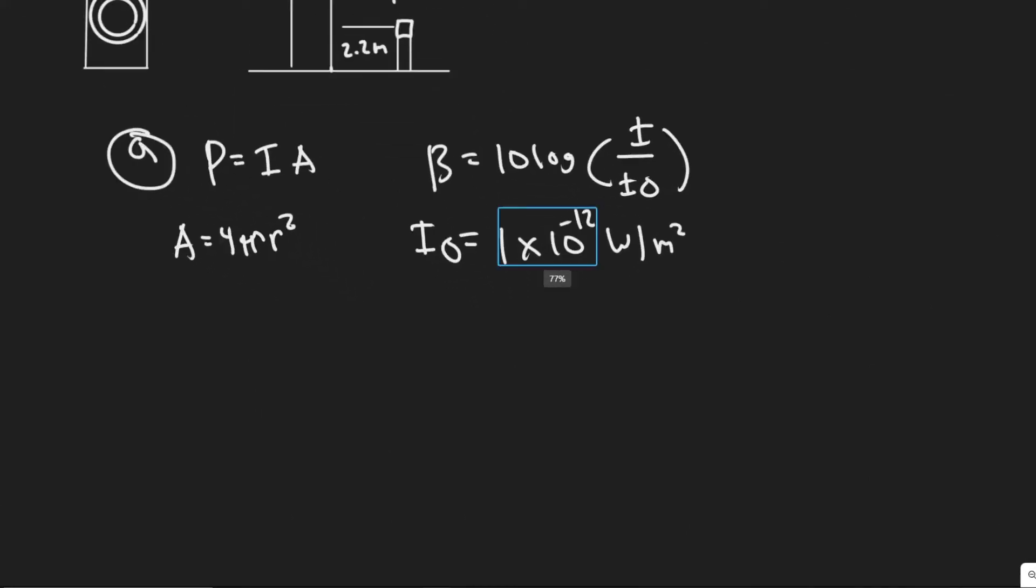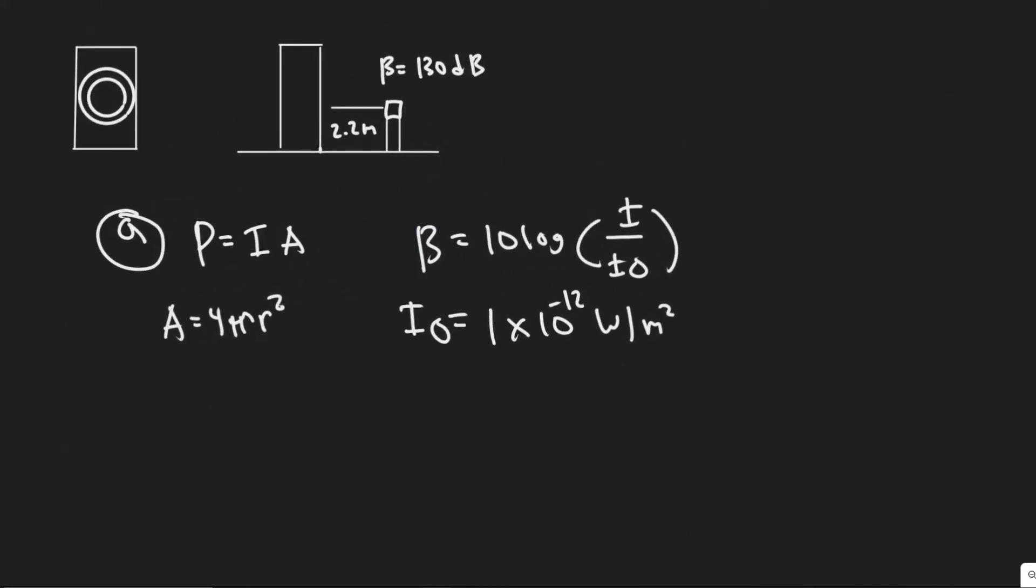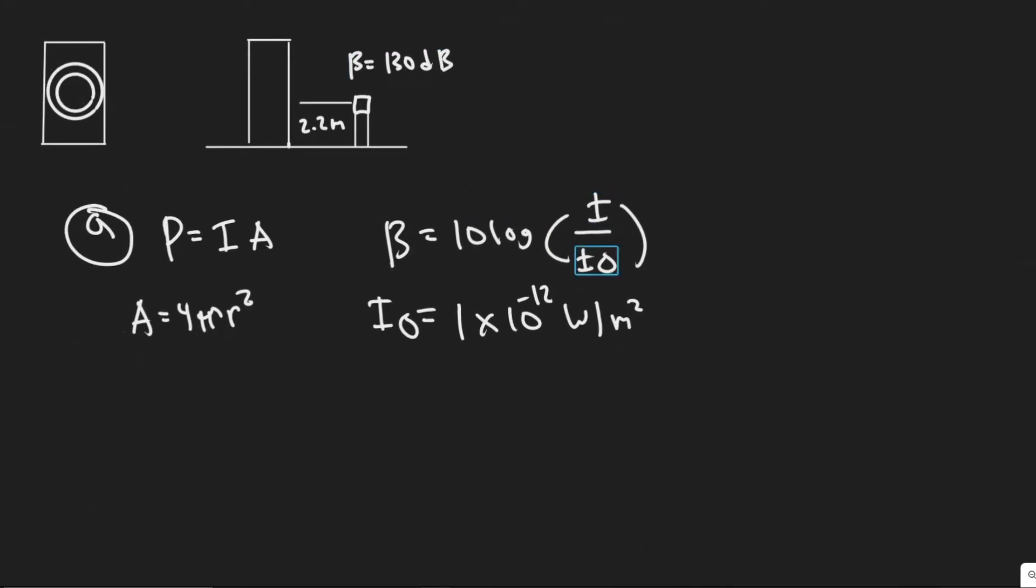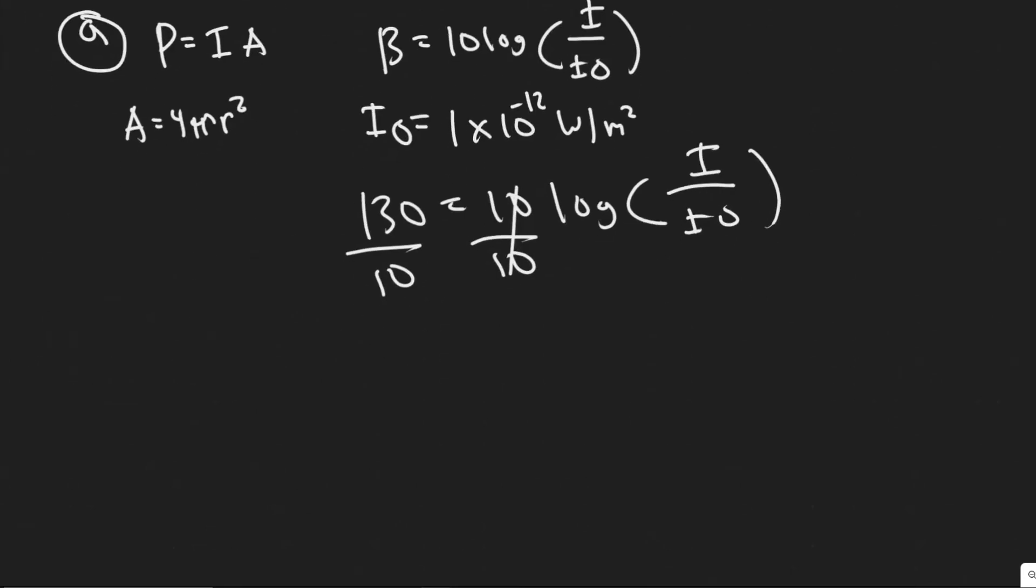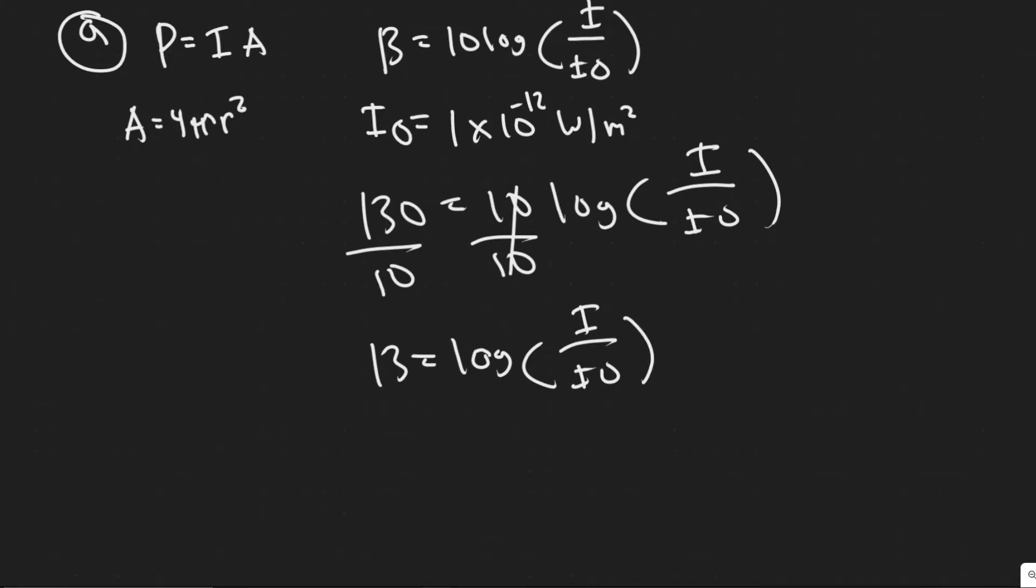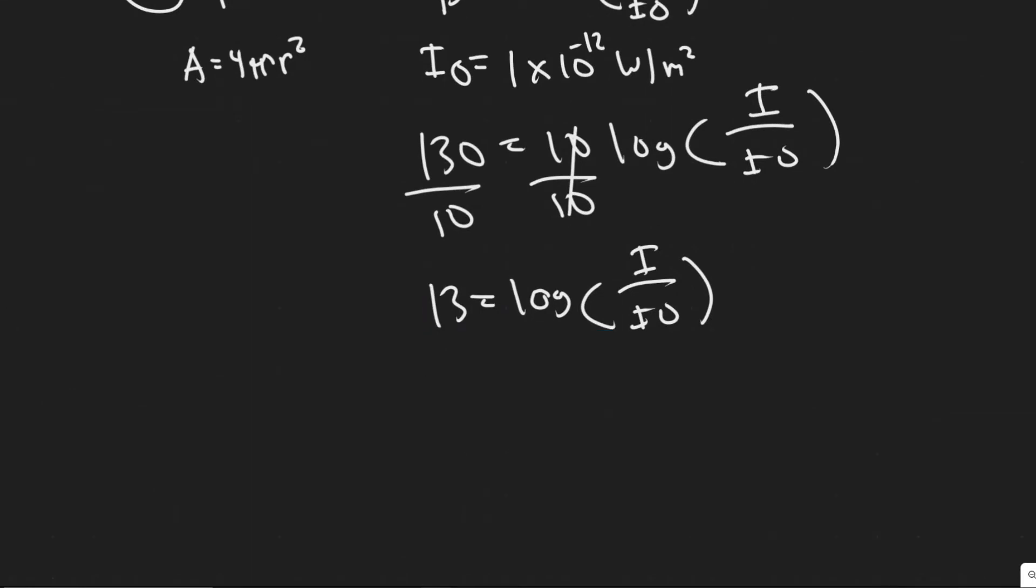And what we're going to want to do now is just solve for I. And so now that we have I₀, we obviously know β at this point, the sound level is 130. We can go ahead and solve for the intensity of the wave. So we have 130 equals 10 log of I over I₀. So to solve, you would divide both sides by 10 to get rid of that. So we have 13 equals log I over I₀. So keep in mind, to get rid of the log here, what you do is you raise 10 to whatever is on the left side. So we would go 10 to the 13 equals, and then now we'll just get rid of this log here. So it's I over I₀.